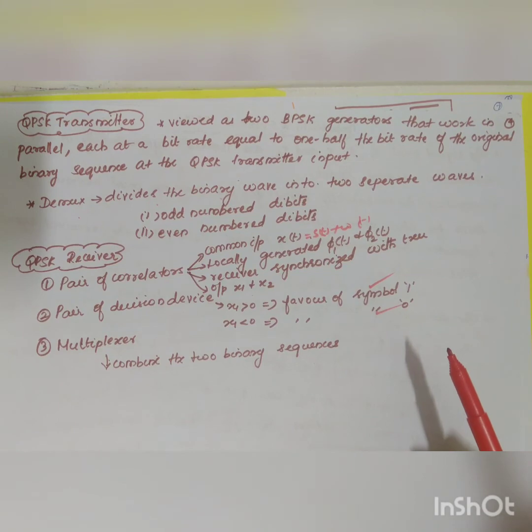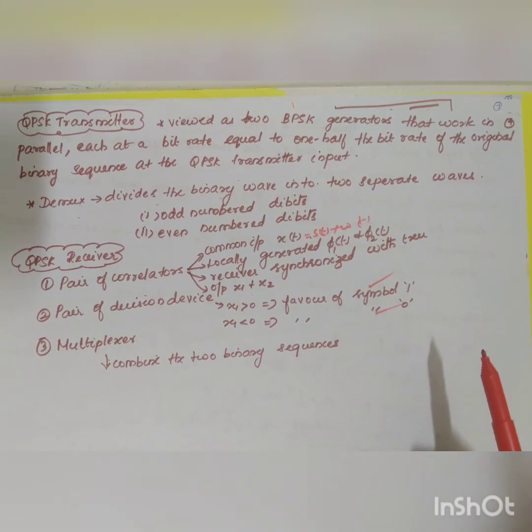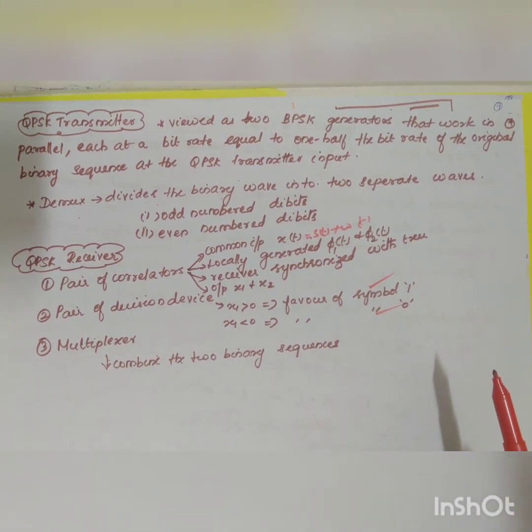This concludes the first video covering QPSK signal space representation, transmitter, and receiver. In the next video we will see the probability of error for QPSK.